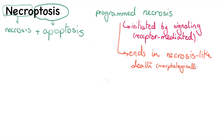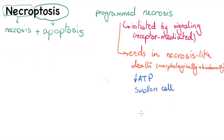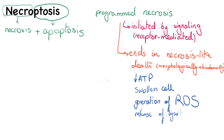Morphologically and biochemically, necroptosis is very similar to necrosis and incorporates many of its characteristics. For example, we have loss of ATP, swelling of the cell and organelles, generation of reactive oxygen species, and release of lysosomal enzymes that degrade all the internal proteins and molecules.